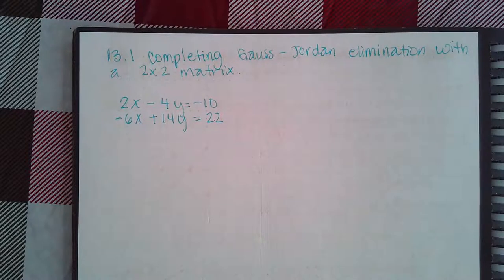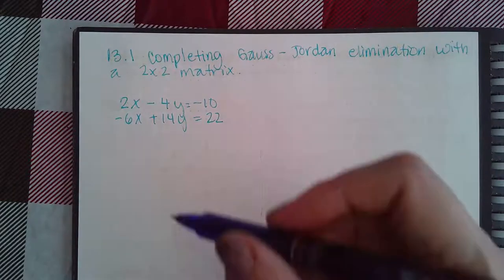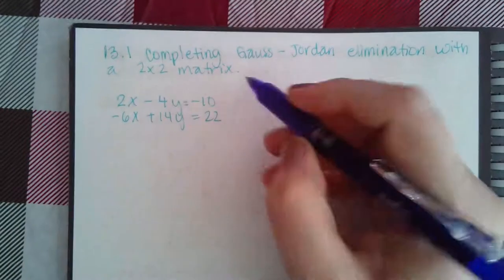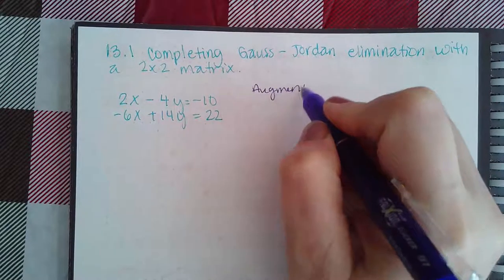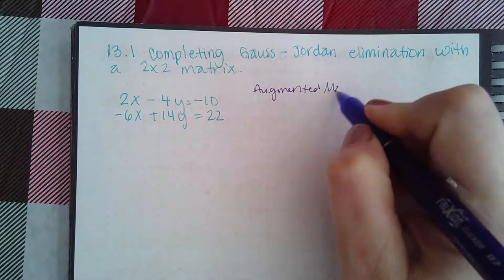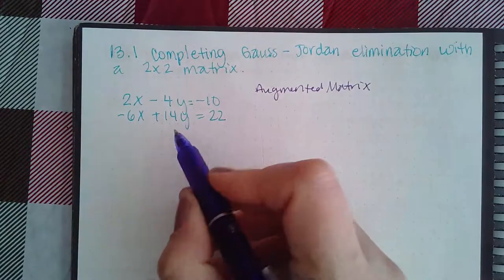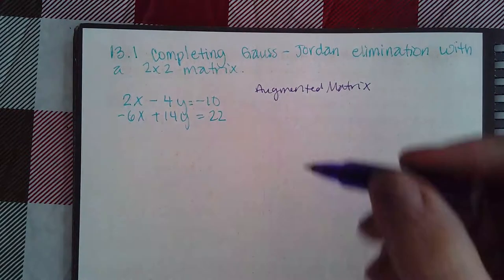Here we have completing Gauss-Jordan elimination with a two-by-two matrix. The first thing we're going to do is convert this into what's called its augmented matrix. We're basically going to turn a system of equations into a matrix.